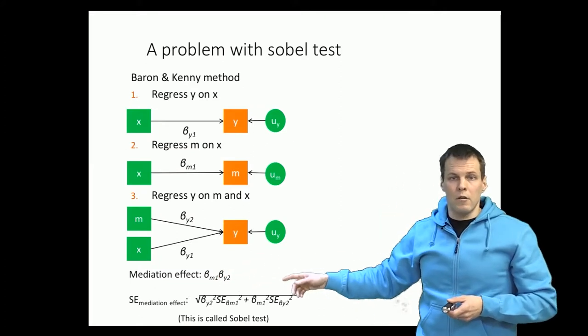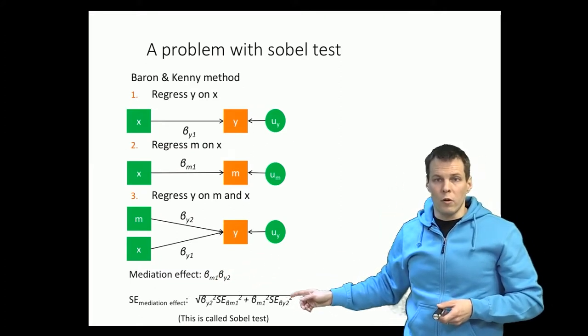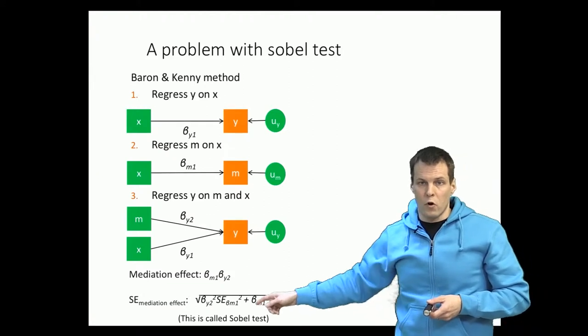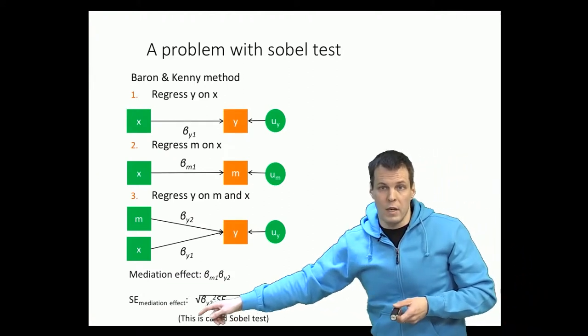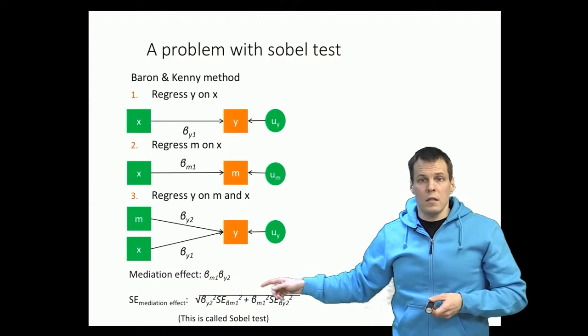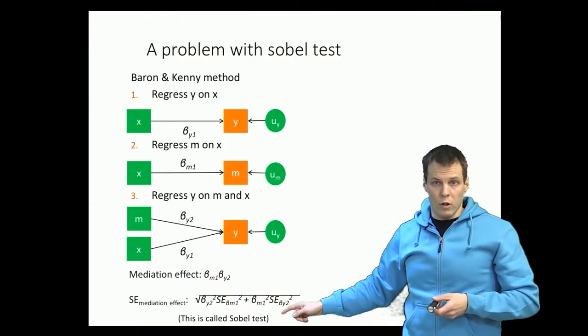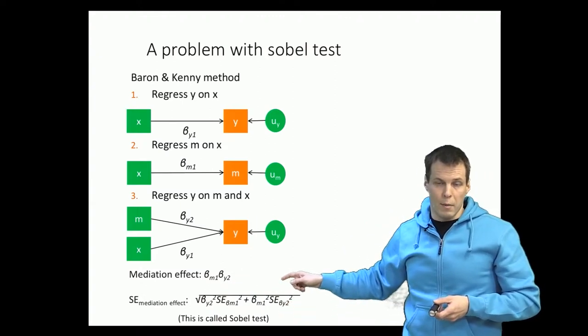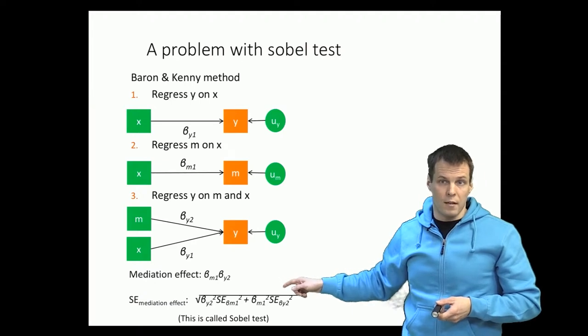So there is a person called Sobel who proposed that we use this kind of formula for the standard error of the mediation effect. It's called a Sobel test and there are different variations but they generally produce results that are very similar to one another.